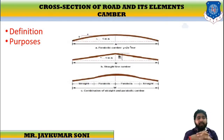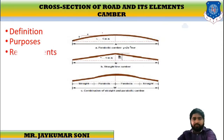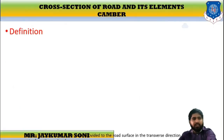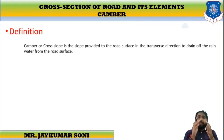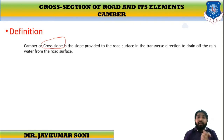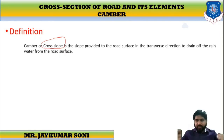Let me tell you that camber looks like this. Camber is also known as cross slope — that is the first thing you need to have in your mind. It is the slope which is provided to the road surface in the transverse direction. Whenever we are traveling on the road, we will experience a slope on this particular part.